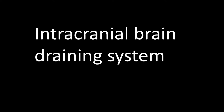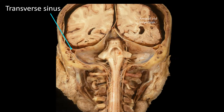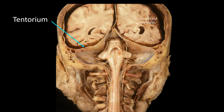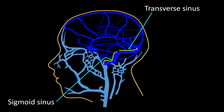Now we will talk about the intracranial brain draining system, which is by far more complex. I would like to start by singling out two pivotal structures. One of these structures is the transverse sinus, which you can see in this specimen indicated by the arrow — notice its position at the edge of the tentorium. The second pivotal structure is the sigmoid sinus.